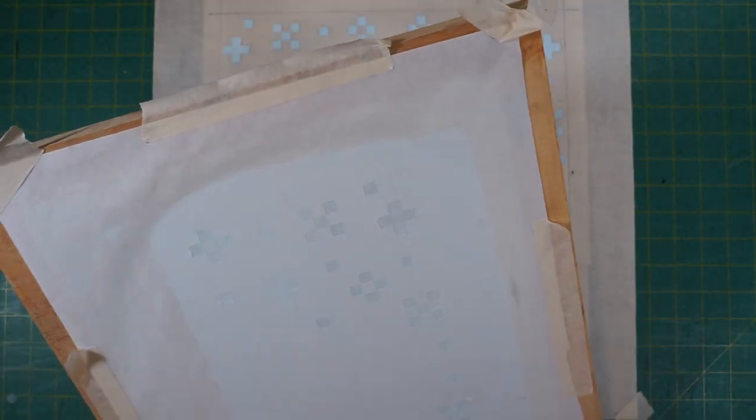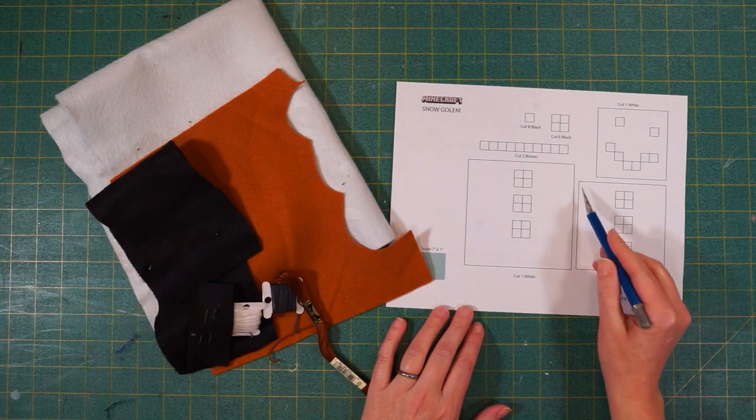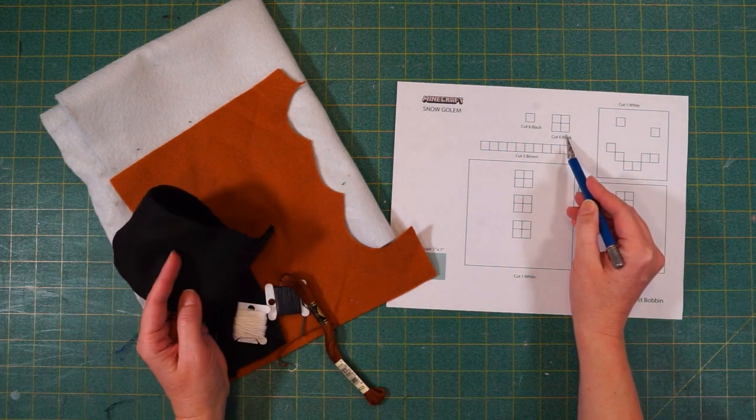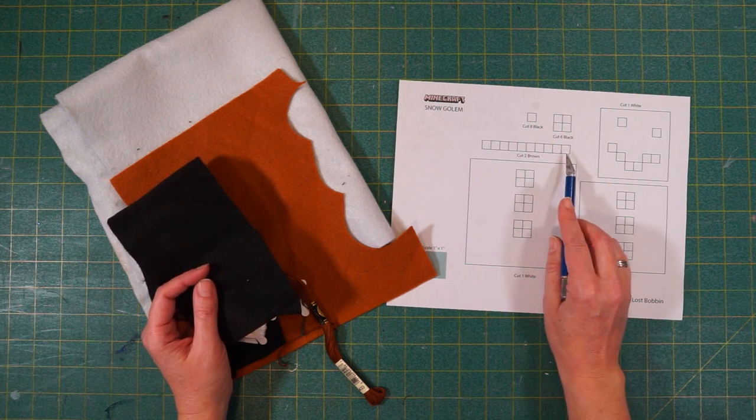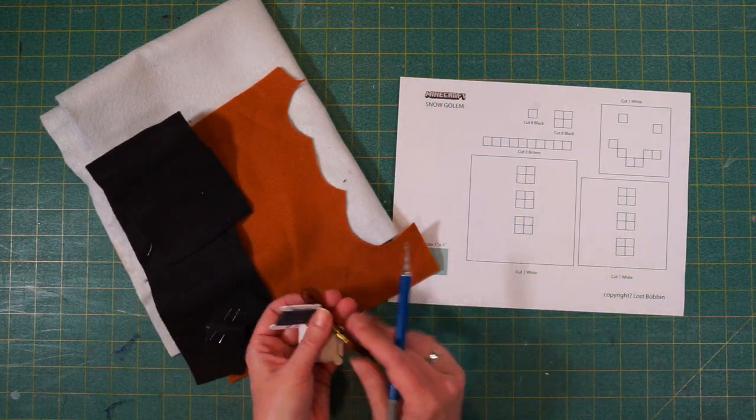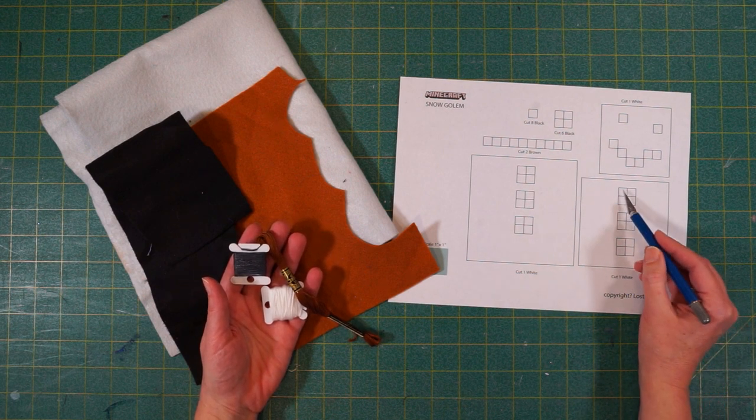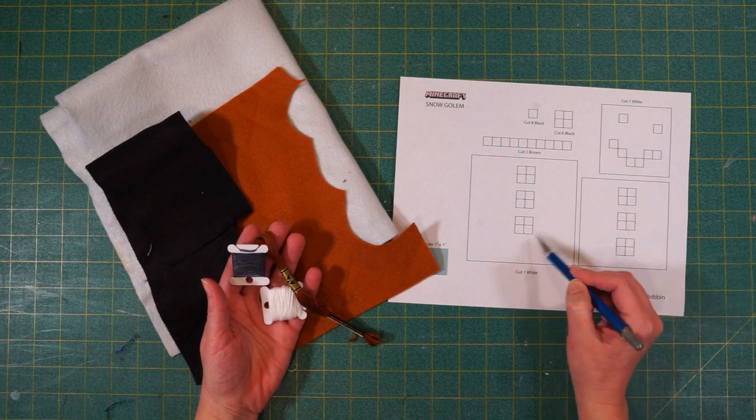The best part about a wax paper screen is how easy it is to clean up. You just pull off the wax paper, throw it away, and wash the screen. While our print dries, we get to move on to the felt work. The plan is I'm going to cut out these big squares. And then I'm going to cut six little black squares, eight even smaller black squares. And then the brown is going to be cut as just a stick.